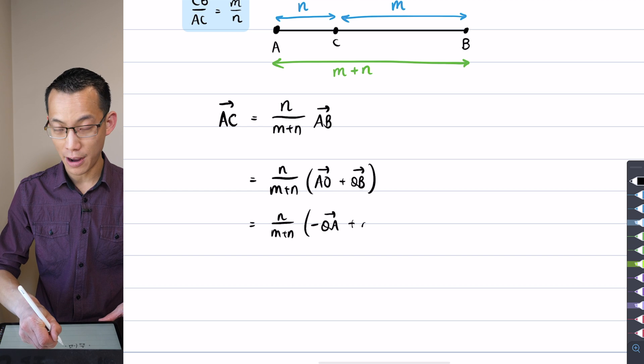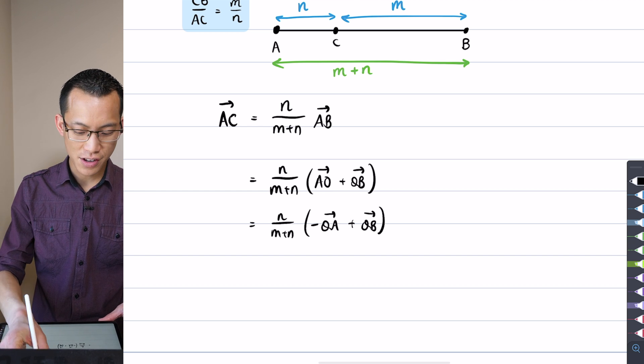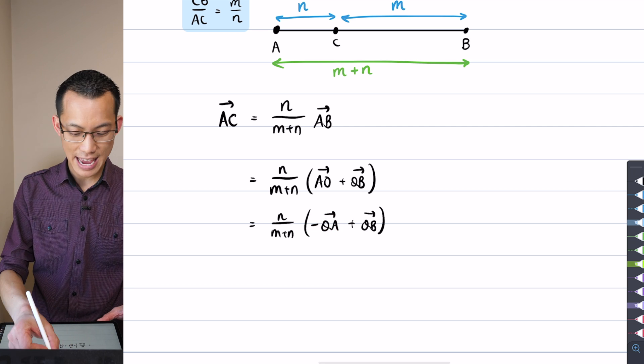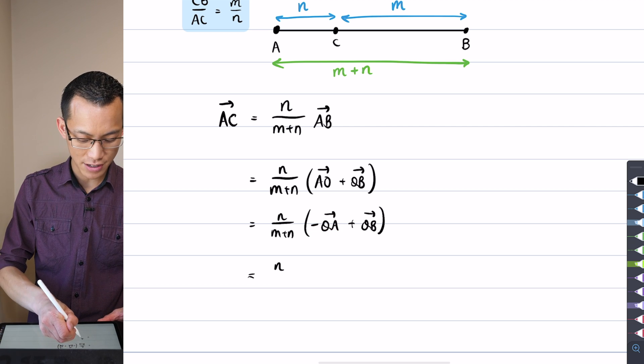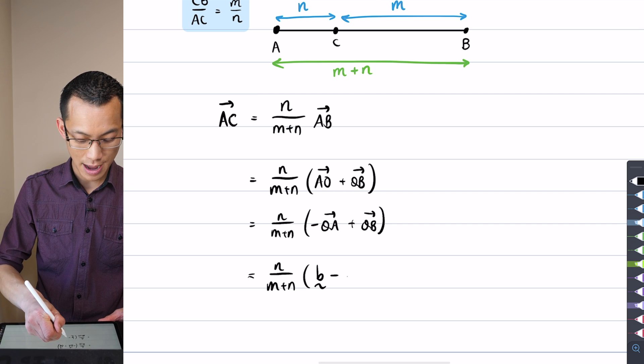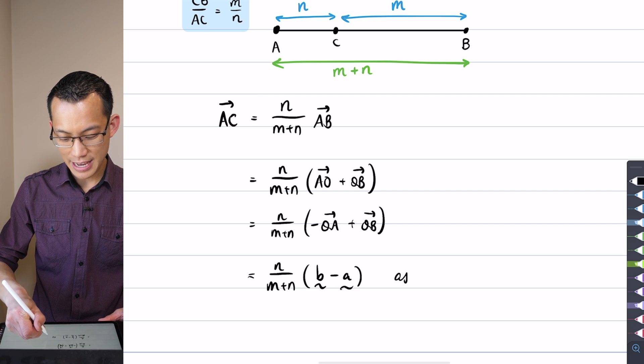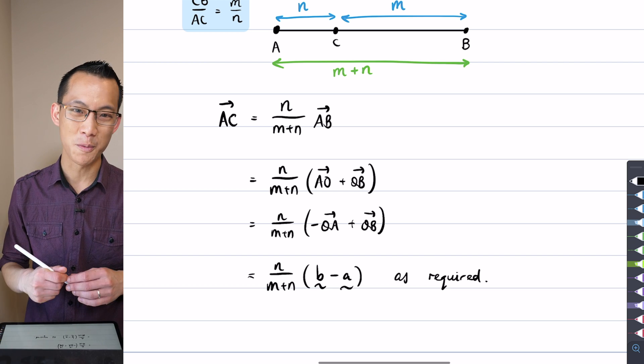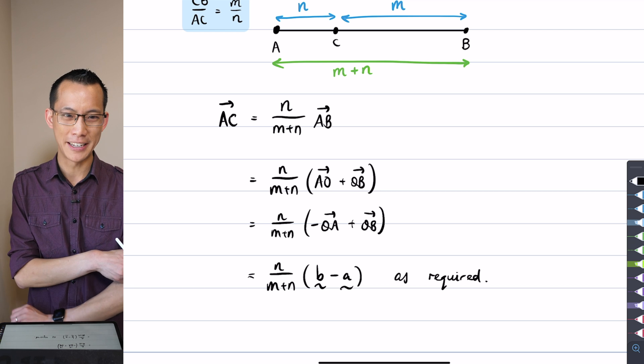I've got n on m plus n out the front. OA by definition is minus OA—I'm just going backwards along the vector. And so you can see here is the little b and here's the minus little a. So I'm very satisfied to just put it there. Not only is this less lines of working, but I would say that each of the lines of working is instrumentally easier to do. It's pretty straightforward working, okay?